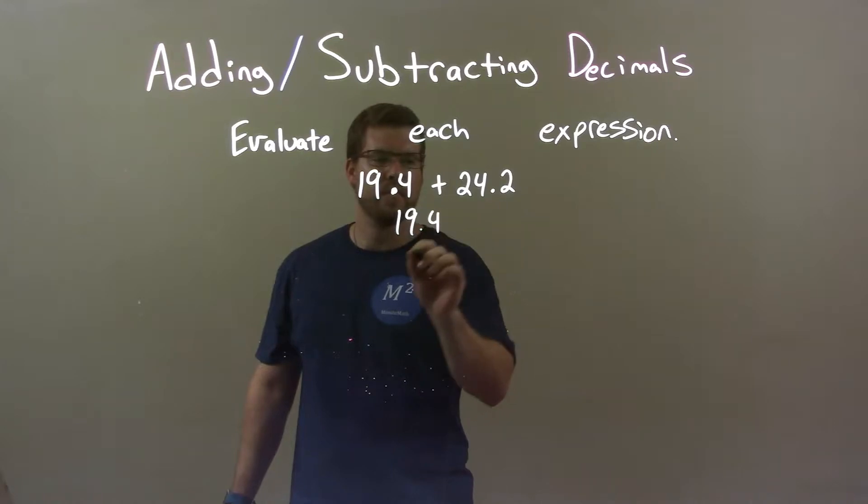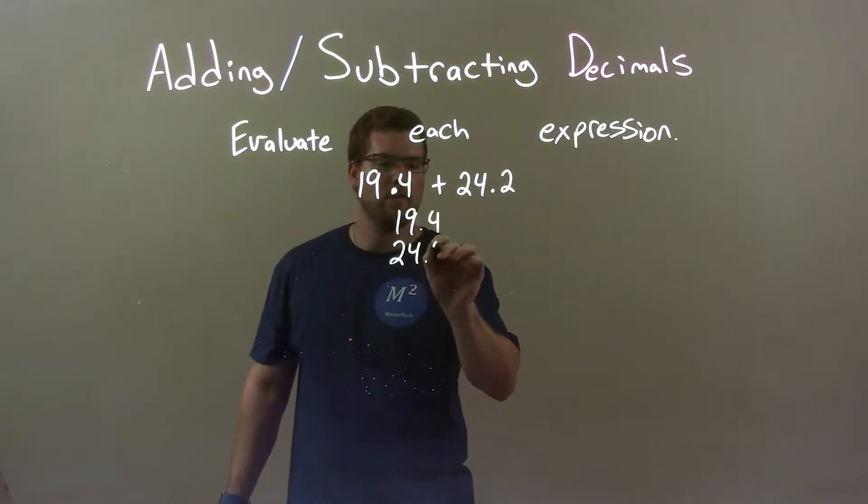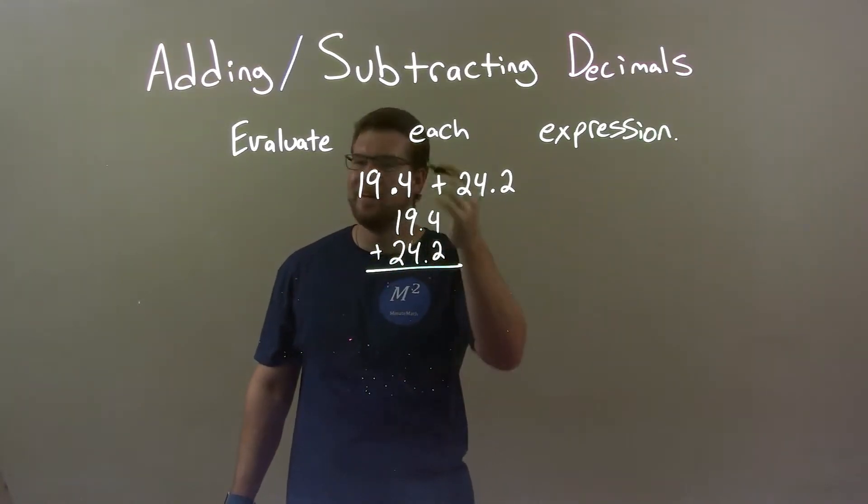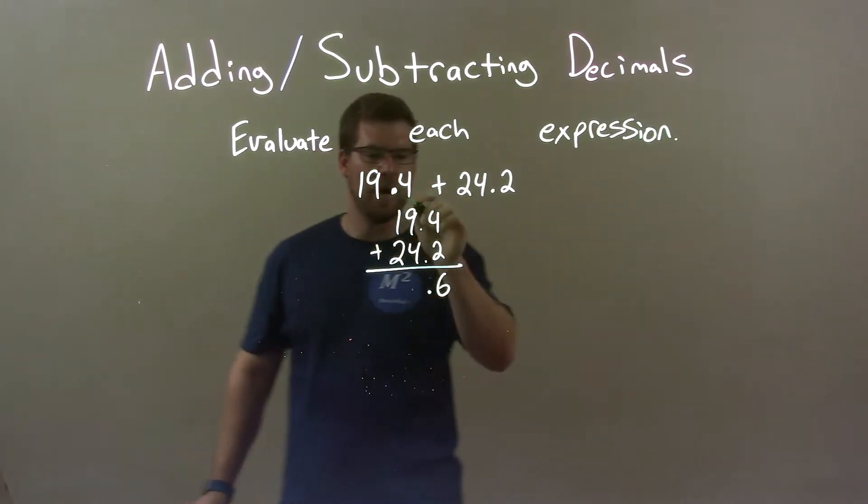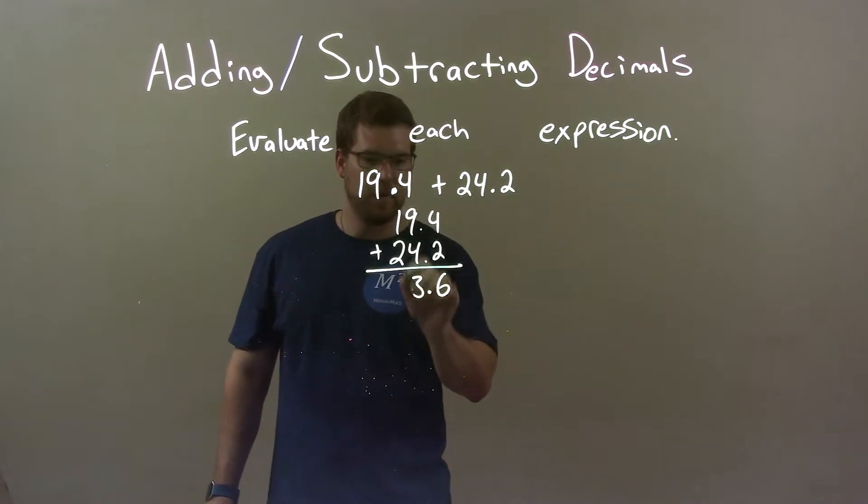So 19.4 and 24.2, decimals lined up, and let's add it like we always do. 4 plus 2 is 6, decimal point there. 9 plus 4 is 13, 3, carry the 1.